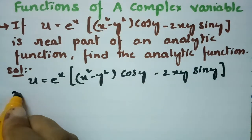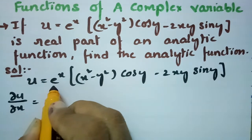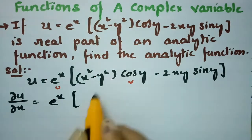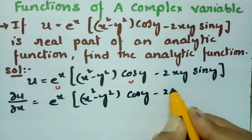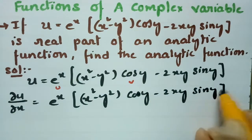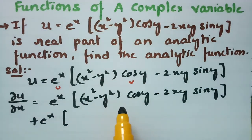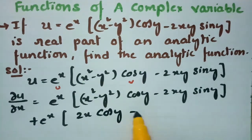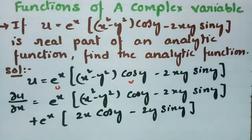For Milne's Thompson method I need ∂u/∂x. Using the product rule (UV rule), the derivative of e^x gives e^x times (x²−y²)·cos y − 2xy·sin y, plus e^x times the derivative of the second part with respect to x, which gives 2x·cos y minus 2y·sin y.